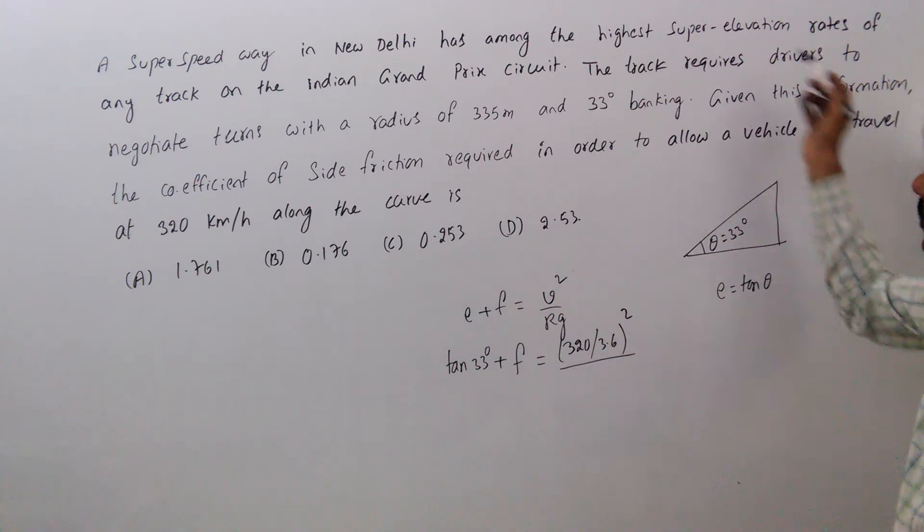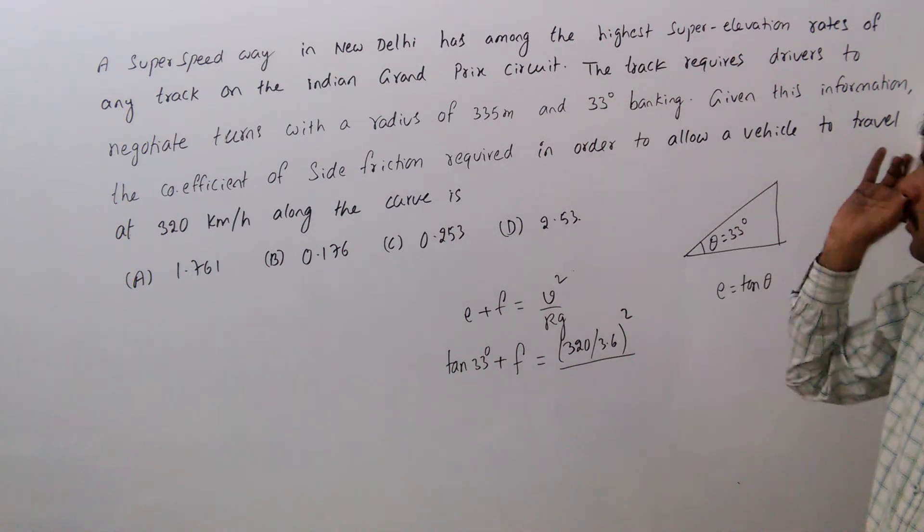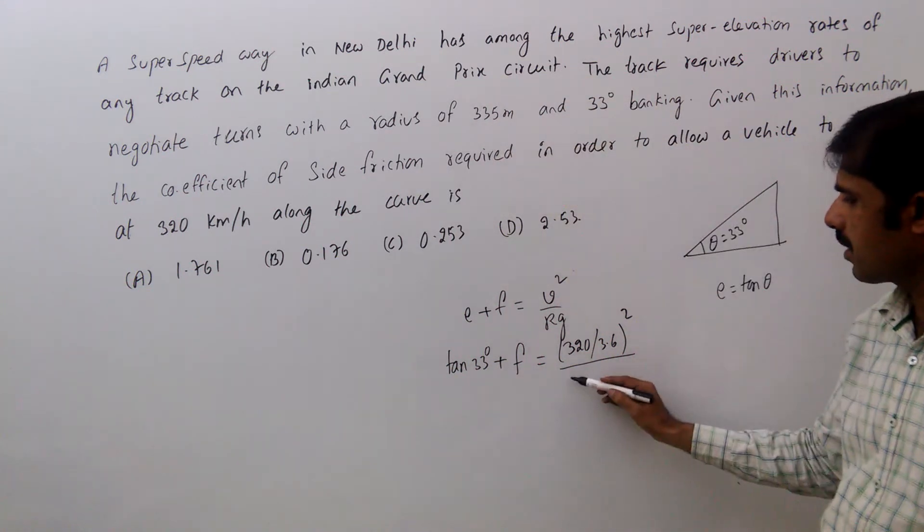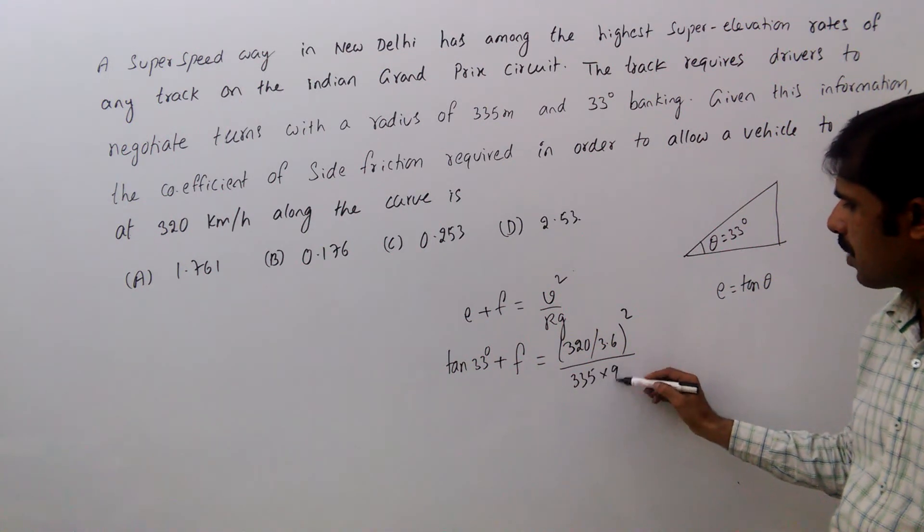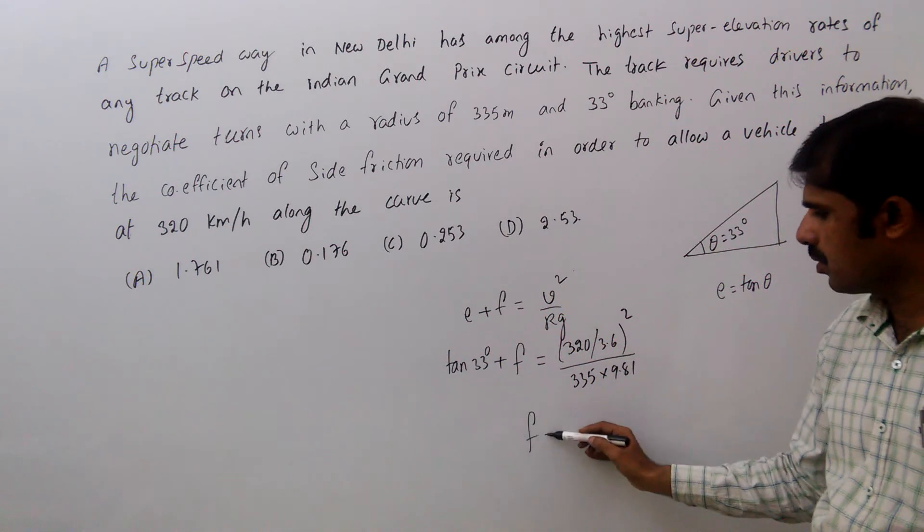Radius of the road is 335 meters into g 9.81, so F equals...